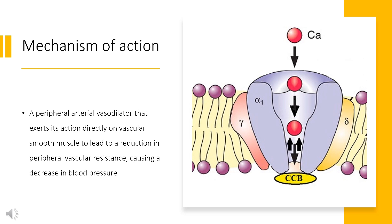Mechanism of Action: By deforming the channel, inhibiting ion-controlled gating mechanisms, and/or interfering with the release of calcium from the sarcoplasmic reticulum, nicardipine inhibits the influx of extracellular calcium across the myocardial and vascular smooth muscle cell membranes. The decrease in intracellular calcium inhibits the contractile processes of the myocardial smooth muscle cells, causing dilation of the coronary and systemic arteries, increased oxygen delivery to the myocardial tissue, decreased total peripheral resistance, decreased systemic blood pressure, and decreased afterload.